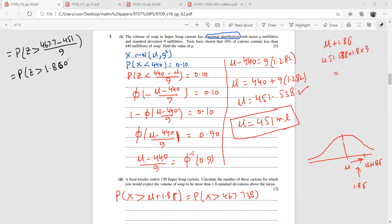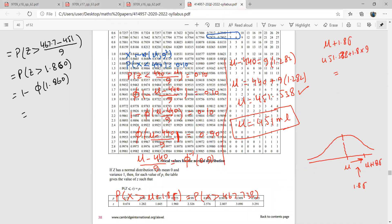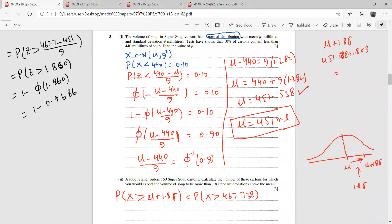This is 1.860. Let me write this as 1 minus phi of 1.860. Someone please look at the table because my table would be covered with all this information. 1.86 is 0.9686. Let me write it here, 1 minus 0.9686.